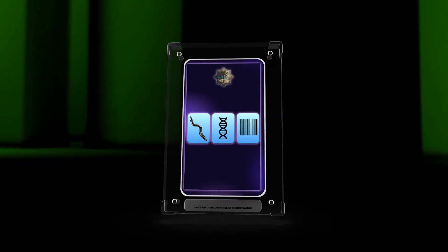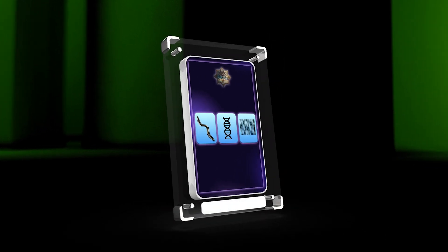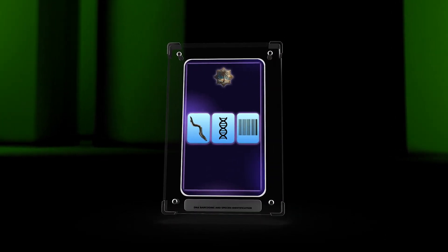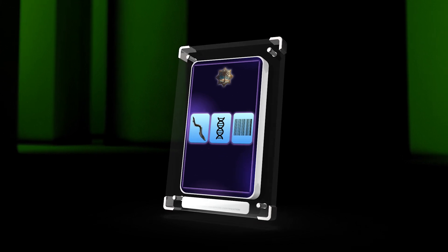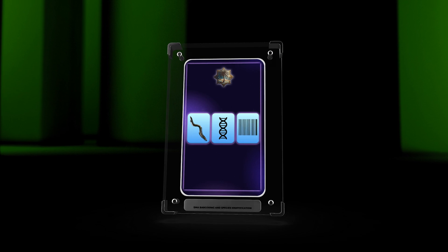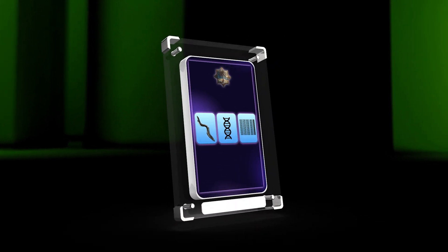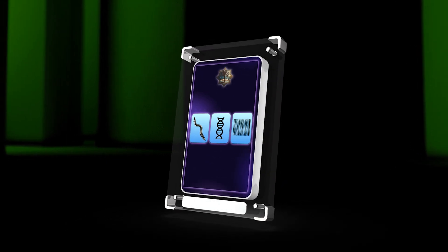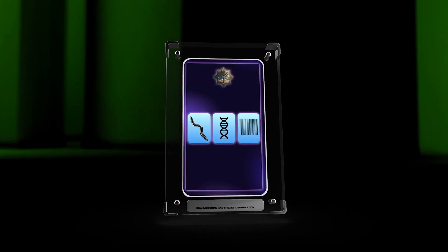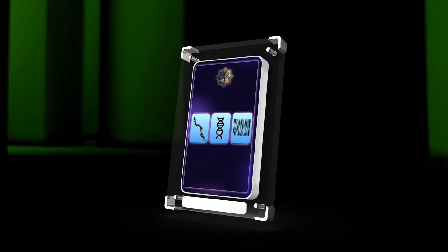In conclusion, DNA barcoding has greatly improved species identification using standardized methods, DNA sequencing, and reference databases. It has applications in taxonomy, ecology, conservation, and forensics. Integration with genomics, metabolomics, and mathematical modeling will enhance accuracy and biodiversity understanding. DNA barcoding is a powerful tool to explore the natural world. Thank you, and see you next class.